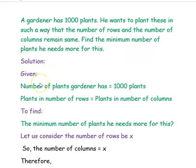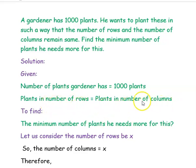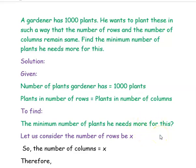First, we will see what is given. The number of plants the gardener has is equal to 1000 plants. The condition given is that plants in number of rows is equal to plants in number of columns. What we are asked to find is the minimum number of plants he needs more. So they have given 1000 plants, and we want to find how many more minimum plants are needed so that number of rows equals number of columns.